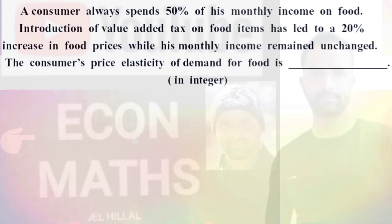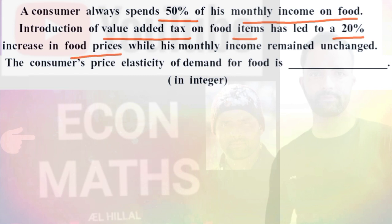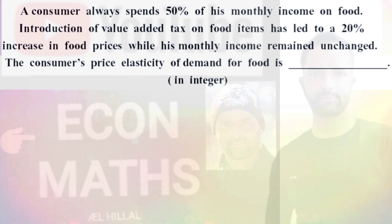In this video we will try to solve the earlier question again using a secondary approach. The question is: a consumer always spends 50% of his monthly income on food. Introduction of value-added tax on food items has led to a 20% increase in food prices while his monthly income remains unchanged. The consumer's price elasticity of demand for food is the question, and the answer should be in integer value.